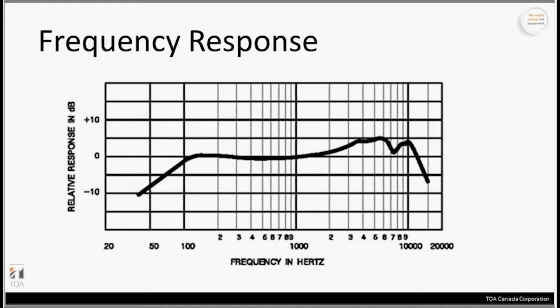Frequency response is another key characteristic. Like a speaker spec sheet, microphones have frequency response characteristics — from 20 Hz at the low end up to 20 kHz at the high end. This sample microphone has a significant drop-off below about 80 Hz, so it doesn't reproduce much low frequency — not the best for micing a kick drum or bass amplifier. It has a fairly flat response until about 3 or 4 kHz, where it boosts slightly, helping with vocal intelligibility. This is a typical response for a vocal microphone.